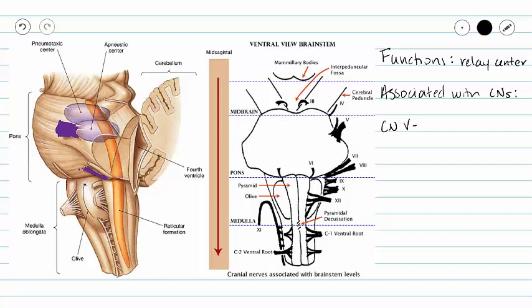Cranial nerve five is also called the trigeminal nerve and it is associated with sensory to your face. So if you touch your face you are stimulating cranial nerve five. Cranial nerve eight is our vestibulocochlear nerve and we are going to be receiving hearing and equilibrium information.